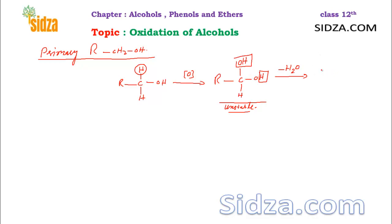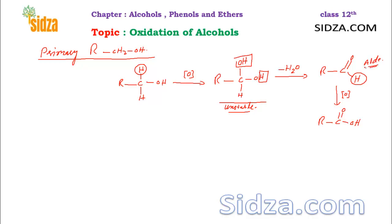After water is lost, the carbon forms a double bond with oxygen, giving R–C=O–H, which is an aldehyde. So from a primary alcohol you get an aldehyde. Since this aldehyde still has one more hydrogen atom on that carbon, it can be further oxidized.